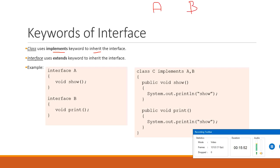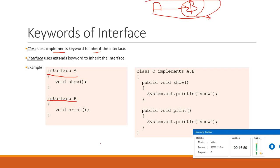An interface can extend from another interface. For example, interface B can extend interface A. When an interface uses another interface it uses the keyword 'extends', so interface B will have all the methods of A plus its own methods. The class that implements interface B must define all the methods of both interface A and interface B.